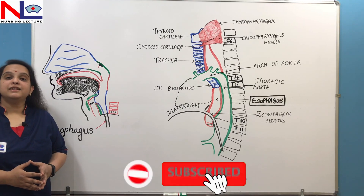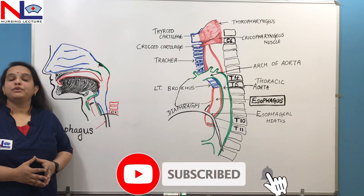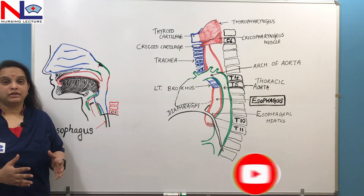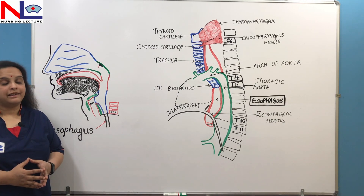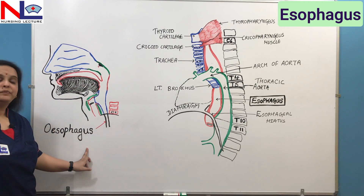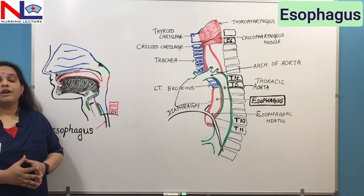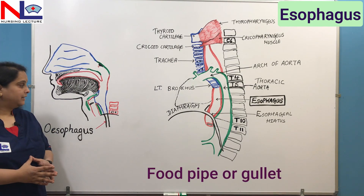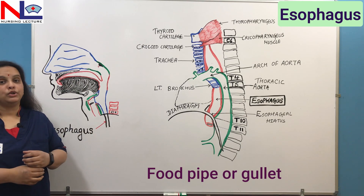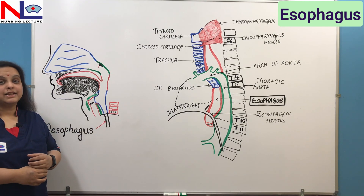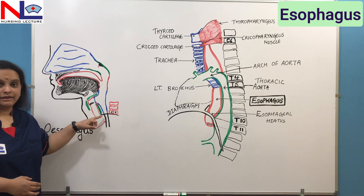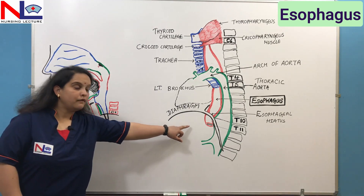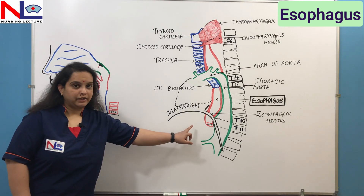Hello everyone. Today in this lecture, I'm going to discuss the next organ in the GI tract or the alimentary canal, which is the esophagus. This is also called the food pipe or gullet, and it is a muscular hollow tube that extends from the lower part of the neck up to the upper part of the abdominal cavity.